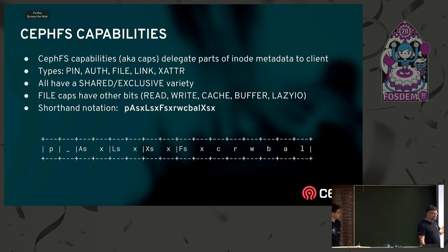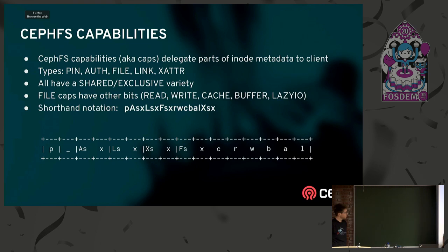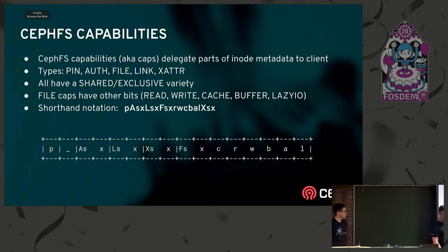The file caps are a little special — they have a whole bunch of other different bits, and they're tracked via bitmask. The file caps are pretty extensive: shared, exclusive, cache, read, write buffer, append, and lazy IO, which is a special mode to reduce MDS communication. But mostly here we're talking about directory operations. Traditionally the MDS has not given out much in the way of caps on directories — we give out shared caps pretty much, but exclusive caps not so much.